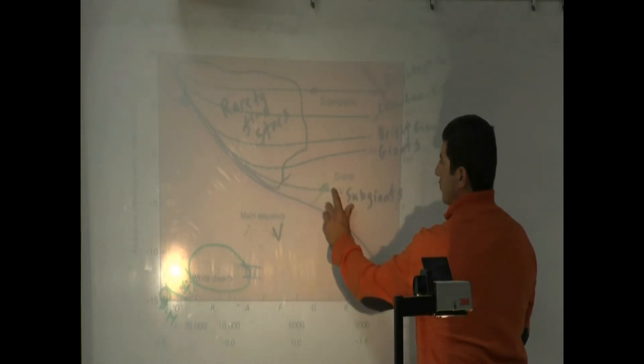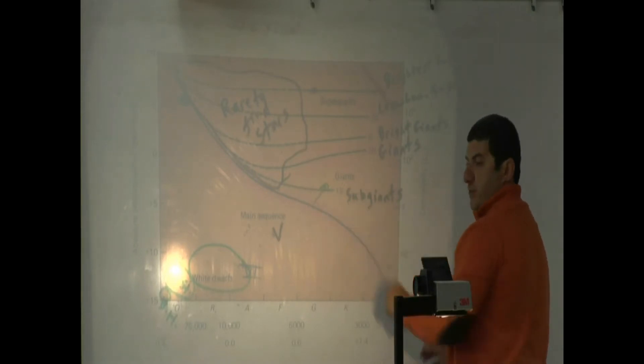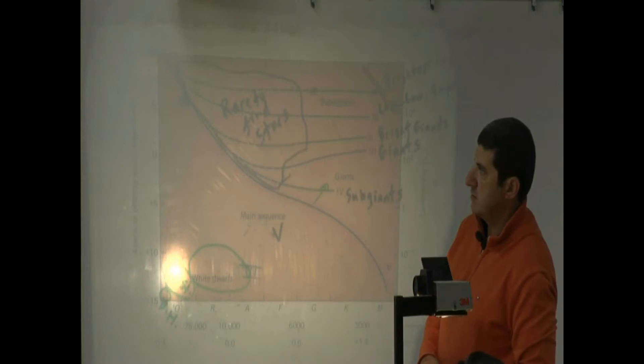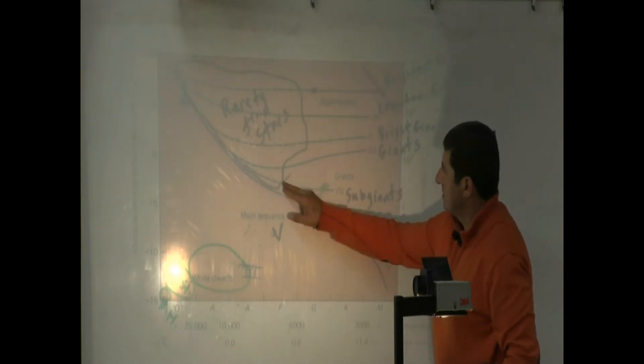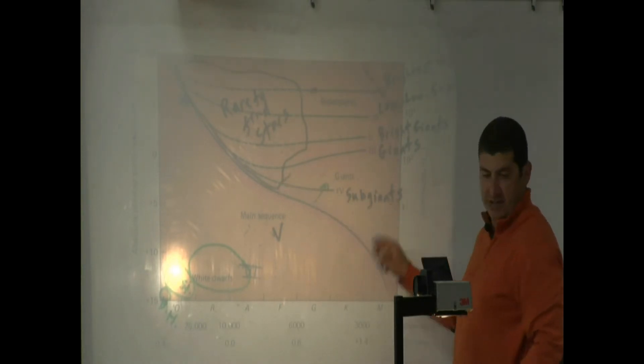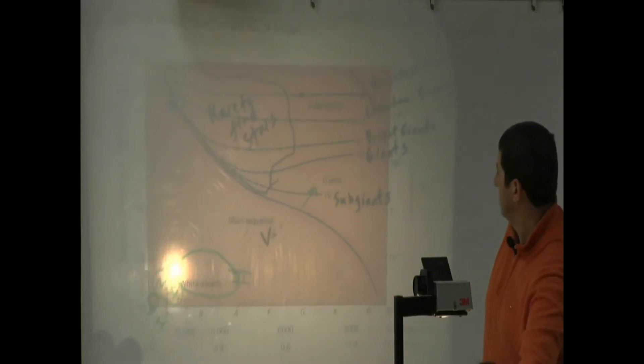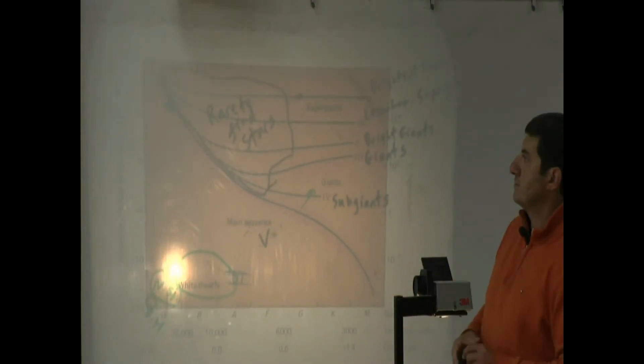For a while it will be found as a Roman numeral IV. Sub-giants are bigger stars and have begun to die. These guys here are Roman numeral IV sub-giants, so the star has started growing.